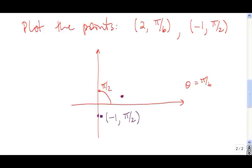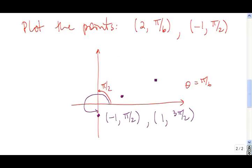The interesting thing is that this point could have another label. If I went through the angle of 3π/2, then that's one unit out along that ray. So another label for this point is (1, 3π/2). And in fact, for every point in the plane, we have an infinite number of polar coordinates that will describe it, because we keep going around the circle.